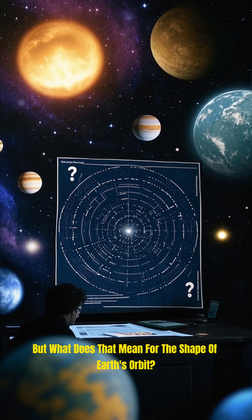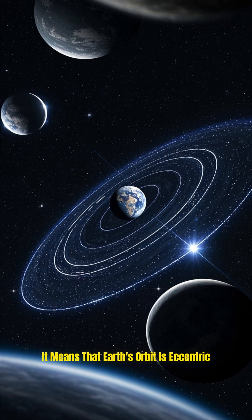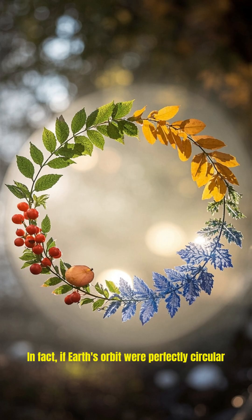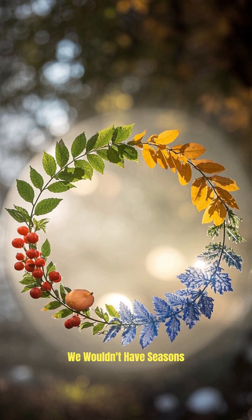But what does that mean for the shape of Earth's orbit? It means that Earth's orbit is eccentric, which is a fancy way of saying that it's not perfectly circular. In fact, if Earth's orbit were perfectly circular, we wouldn't have seasons.